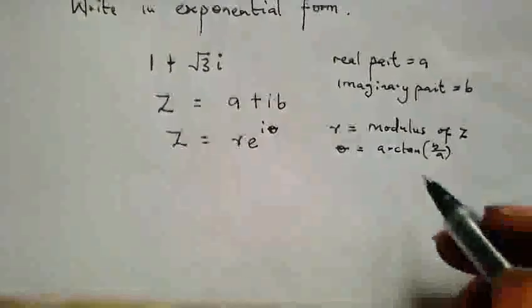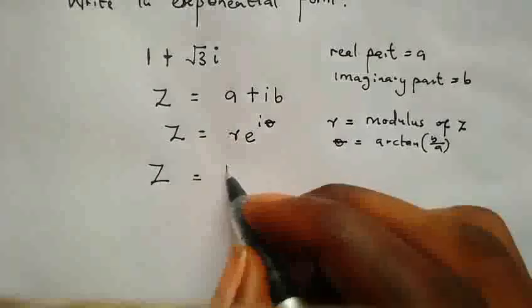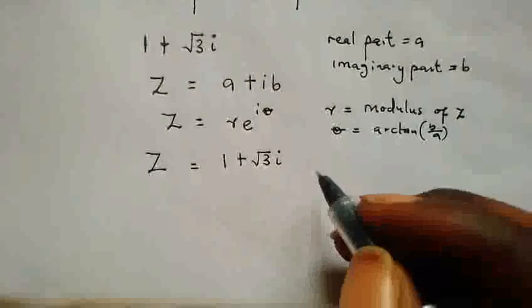Now, let's say we have Z is equal to, according to our question today, 1 plus square root of 3I.